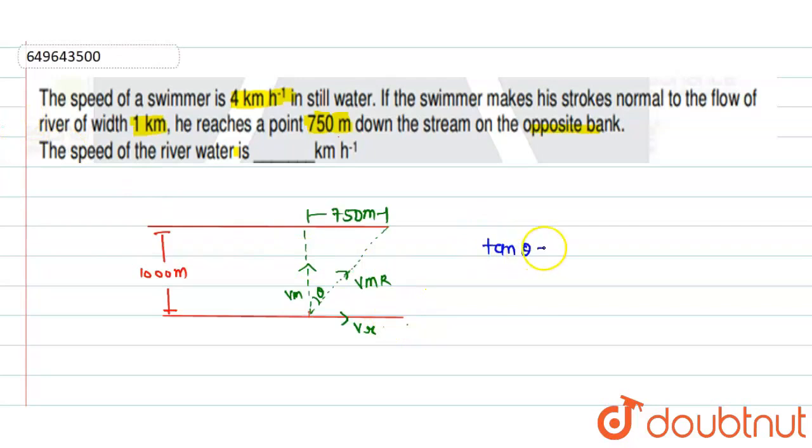In this triangle, tan theta is equal to 750 divided by the base which is 1000 meter, the full distance. This is 0.75, this is 3 by 4. So Vr is equal to tan theta times 4 km per hour, so 4 times tan theta is 3 by 4. Vr is equal to 3 km per hour. This is the speed of the river.